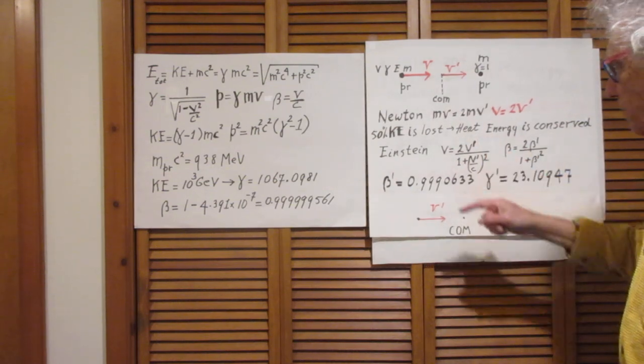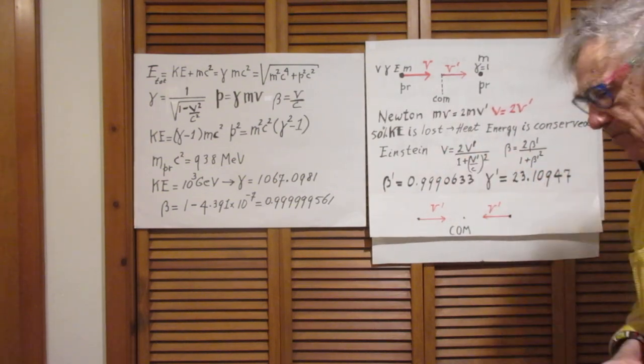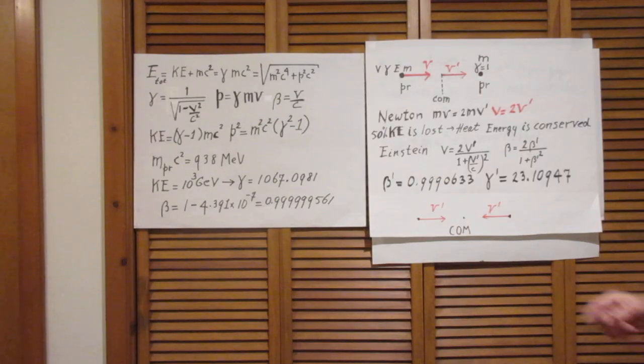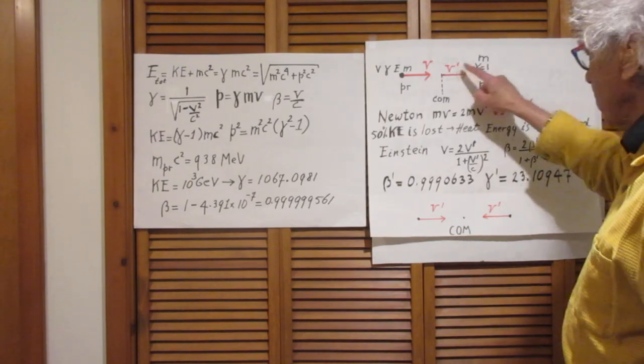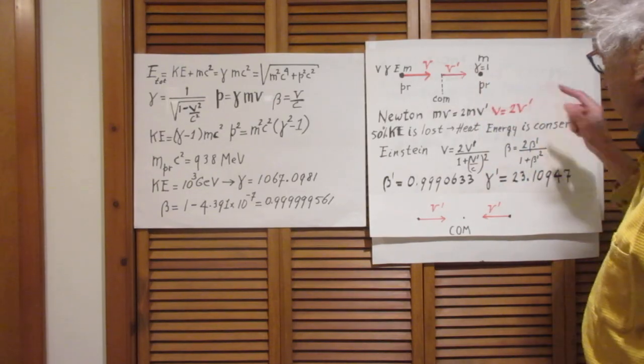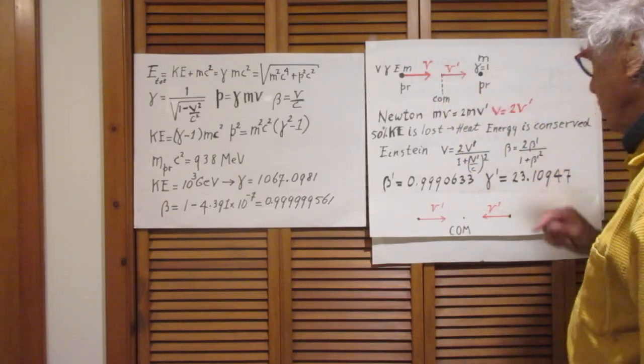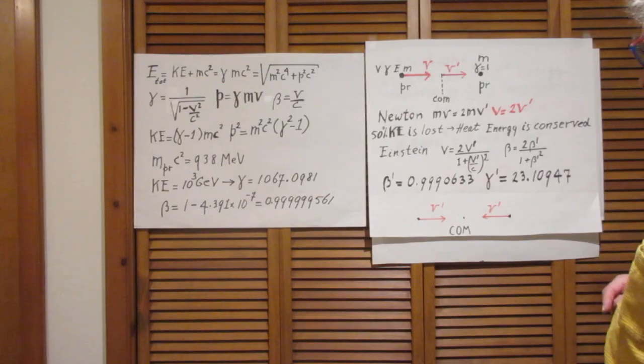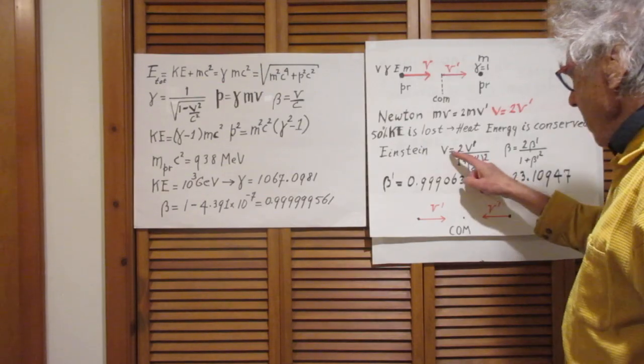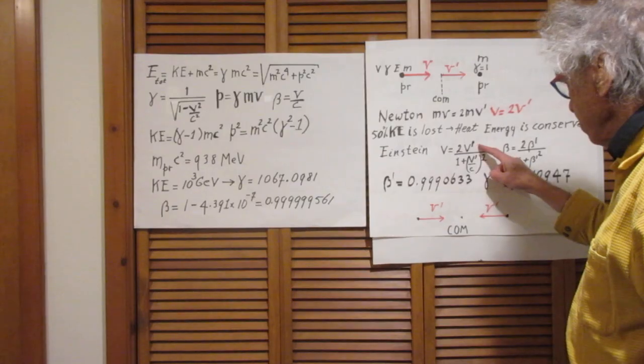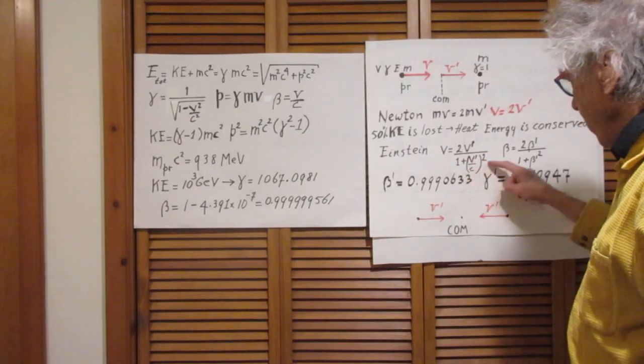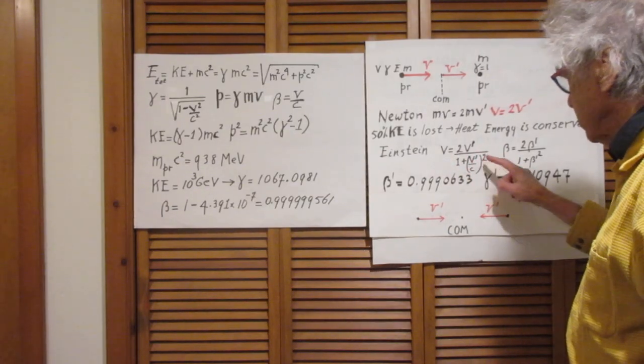But in Einstein physics, special relativity, the situation is very, very different. For one thing, V square is not at all half V. V is not at all 2V'. V is 2V' divided by 1 plus V'² over C².